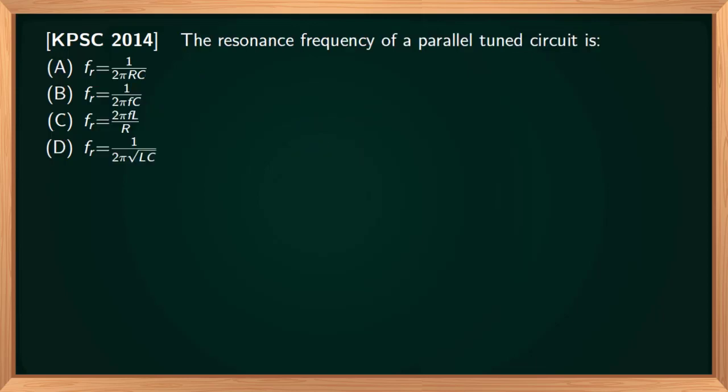The resonant frequency of a parallel tuned circuit is: Option A, FR equal to 1 by 2 pi RC; Option B, FR equal to 1 by 2 pi FC; Option C, FR equal to 2 pi FL by R; Option D, FR equal to 1 by 2 pi root LC.